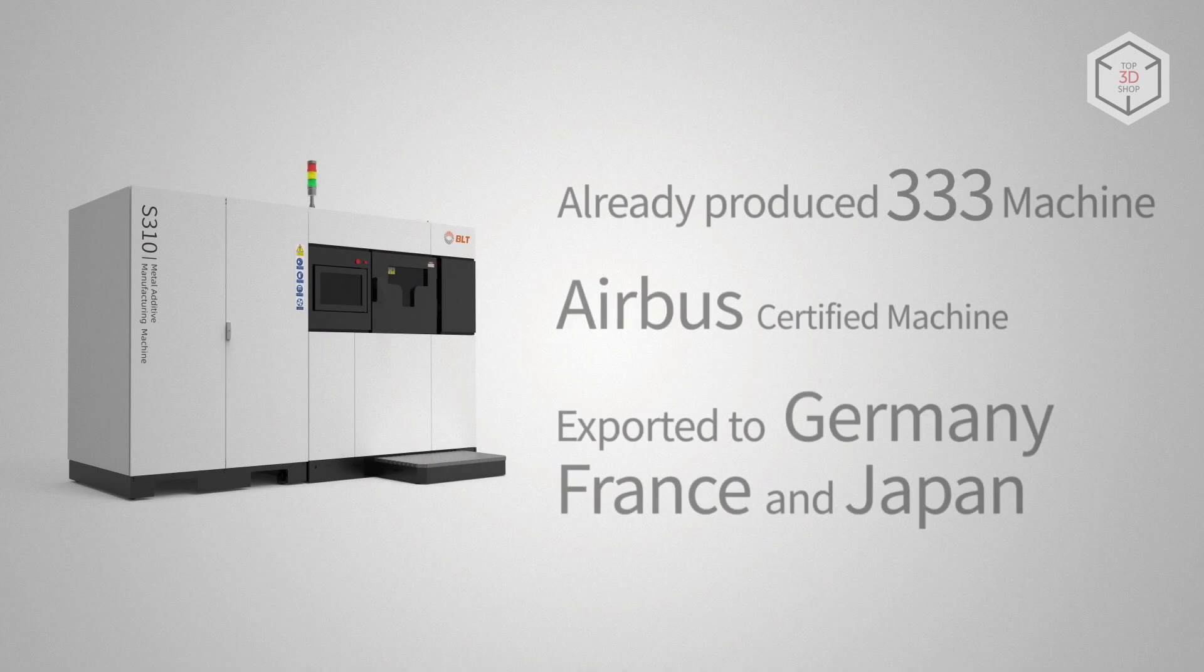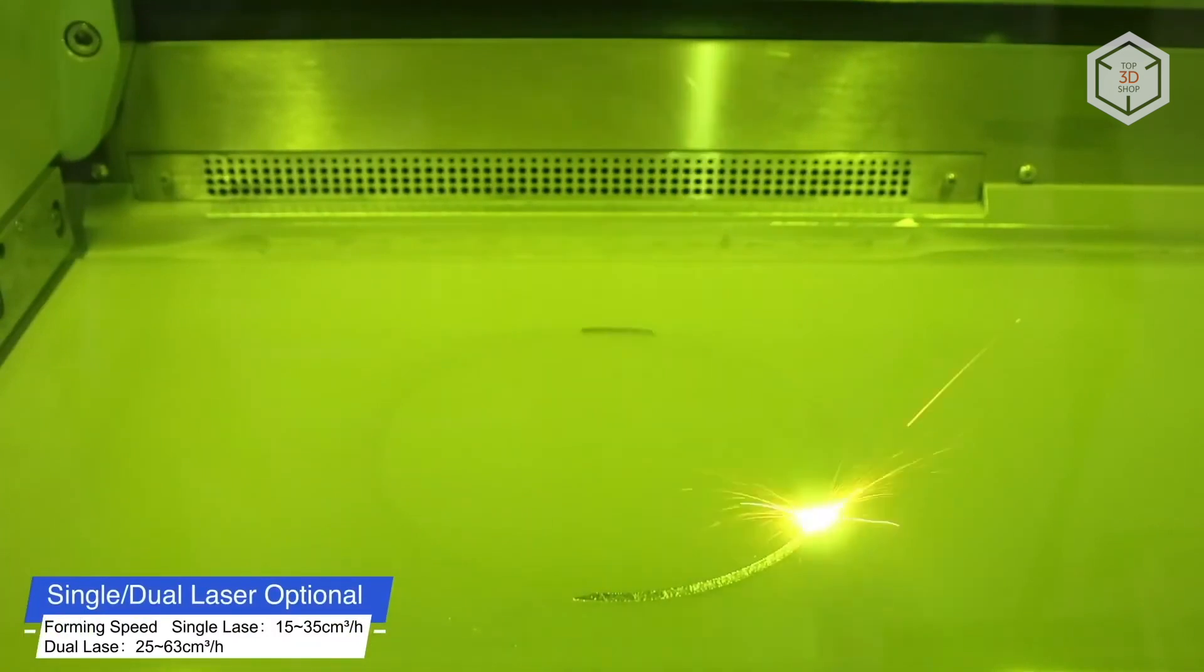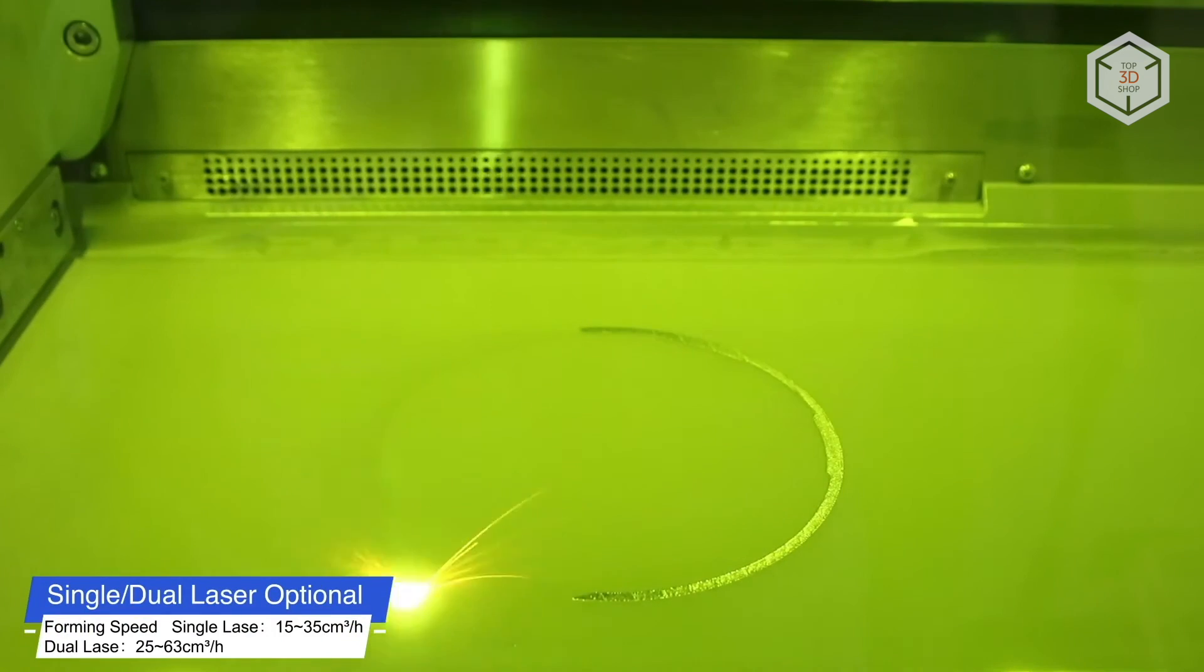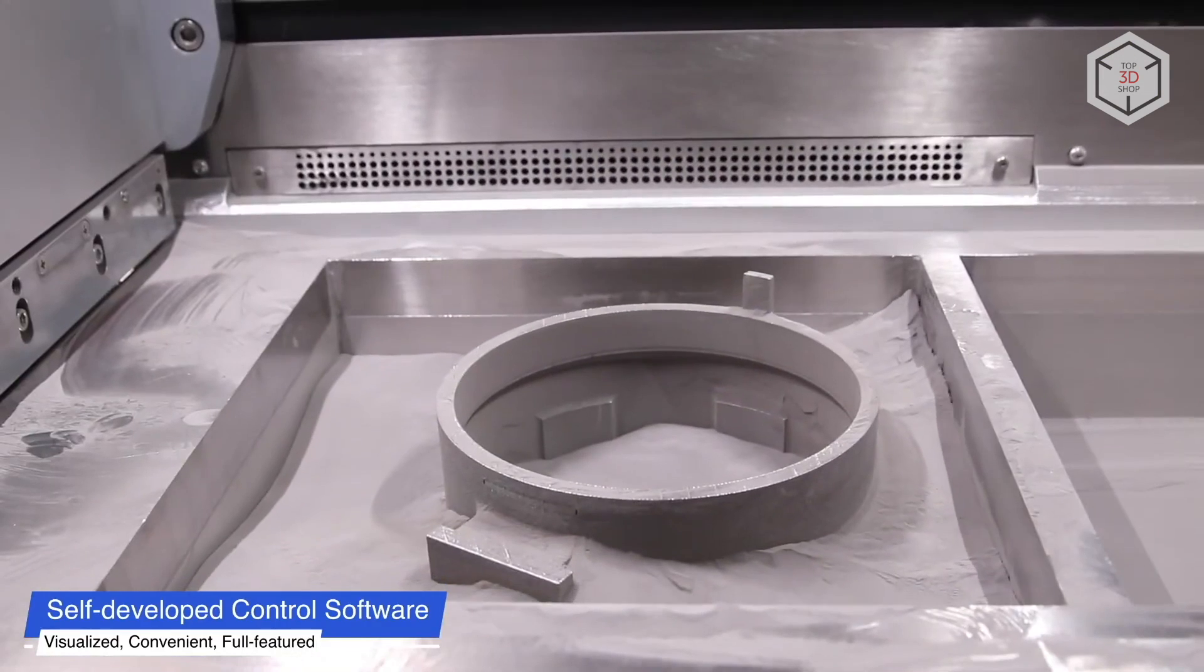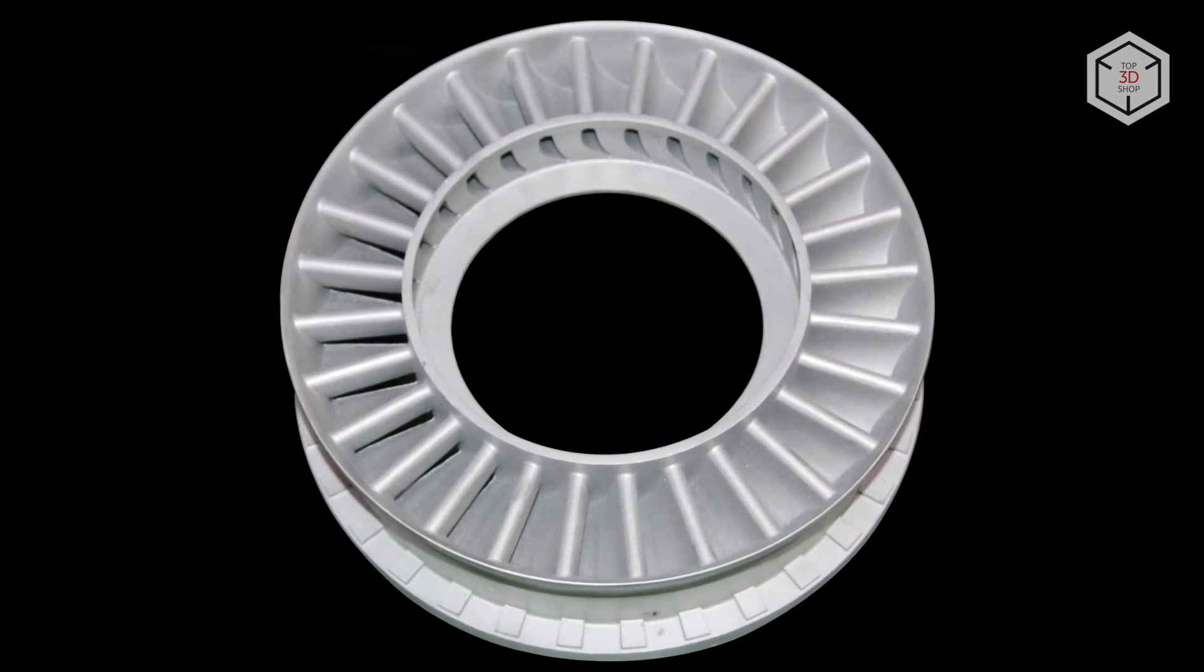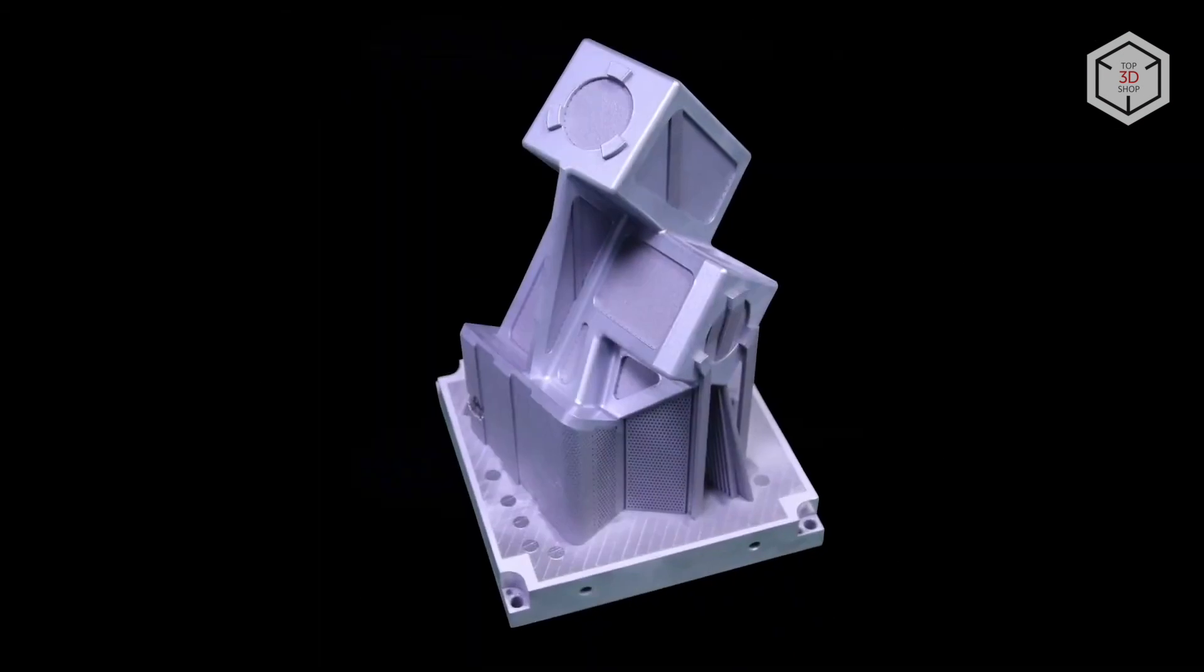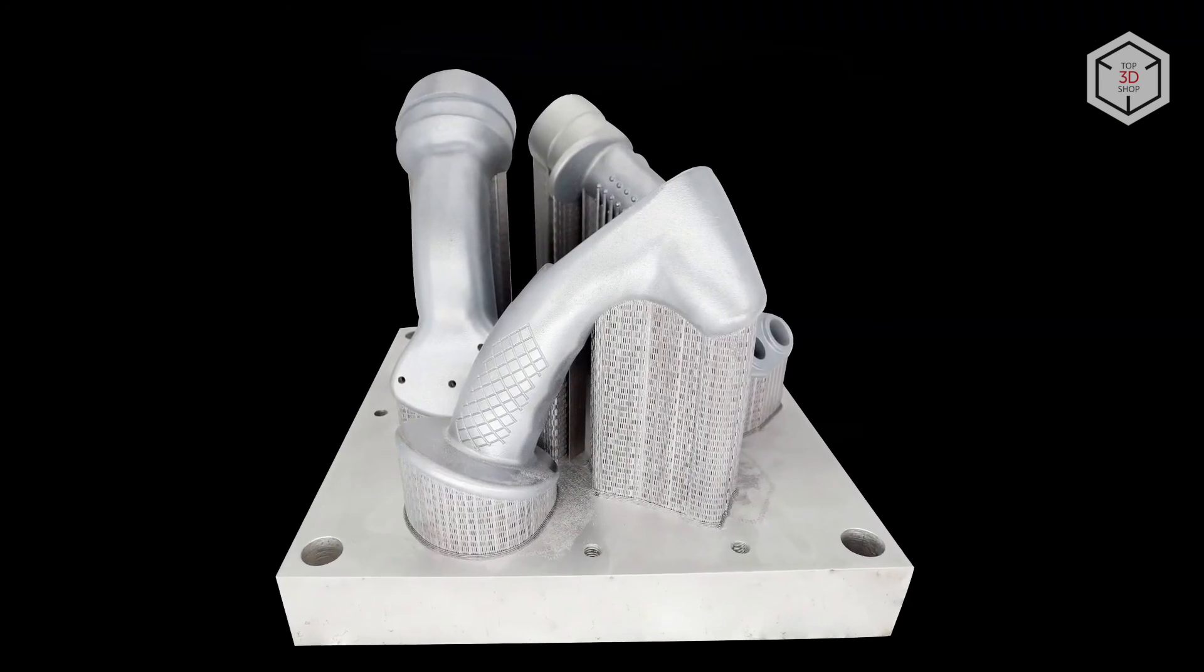The EPM300 from E plus 3D is a powerful machine for efficient mass production. Its build volume is 305 x 305 x 450 mm, and the layer thickness ranges from 20 to 120 microns. The 3D printer can be equipped with one or two lasers of 500 or 1000 watts each. The list of consumables includes metal powders based on titanium, aluminum, nickel, cobalt chrome, copper, and various types of steel.